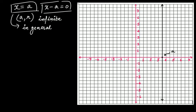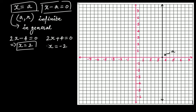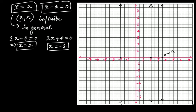Let's look at more general examples. If you are given 2x − 4 = 0, then x = 2. If you are given 2x + 4 = 0, then x = −2. So x = 2 reminds you of x = A, meaning the line passes through x = 2 on the x-axis. Similarly, x = −2 means the line passes through x = −2 on the x-axis.